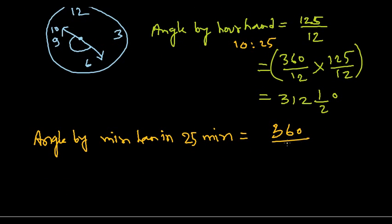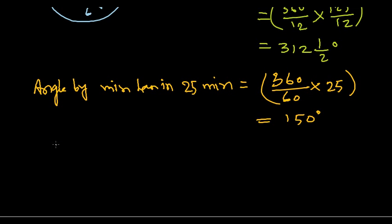360 degrees in 60 minutes gives us a complete 360 degree rotation, so for 25 minutes we multiply: (360/60) × 25 = 150 degrees.